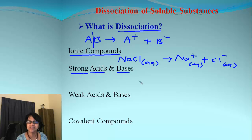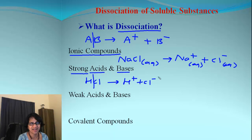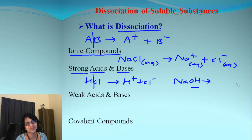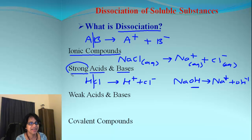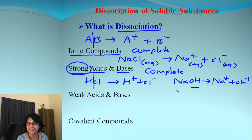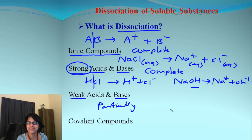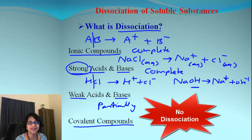If we have a strong acid or base we will still have dissociation. For example, HCl dissociates into hydrogen ion and chloride ion. A strong base like NaOH will dissociate as sodium ion and hydroxide ion. Strong acids or bases have almost complete dissociation. Soluble ionic compounds have complete dissociation. Weak acids or bases, like acetic acid, dissociate only partially. Covalent compounds can never form ions — dissociation never takes place.